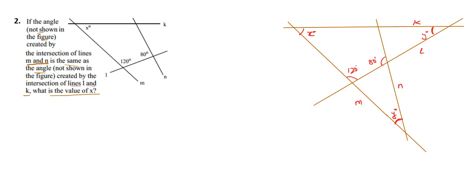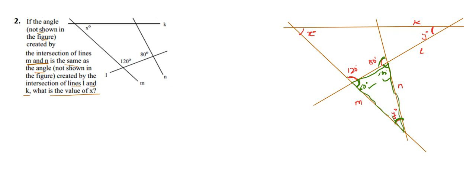Here we have 120 degrees. The supplementary angle to 120 degrees is 180 minus 120, which gives 60 degrees. Similarly, we have 80 degrees, and 180 minus 80 gives 100 degrees. These two angles — 60 degrees and 100 degrees — are interior angles of a triangle. The interior angles of a triangle sum to 180 degrees, so 60 plus 100 plus Y equals 180, giving Y equals 20 degrees.